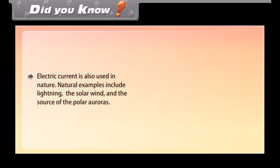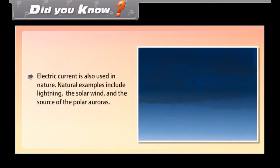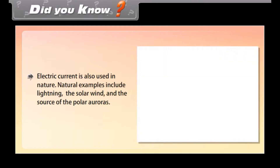Did you know? Electric current is also used in nature. Natural examples include lightning, the solar wind, and the sources of the polar auroras.